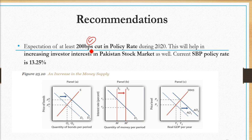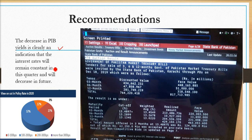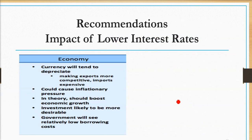Another recommendation involves a basis point system (BPS) of monetary policy expected in Pakistan. This will increase investments in the stock exchange. The current SBP policy rate is 13.25 percent; as shown in the economics diagram, a D1-to-D2 shift will shift the quantity of money and bring interest rates down, increasing money supply and in turn increasing aggregate demand. The decrease in PIB yield is a clear indication that interest rates will decrease in future. Lower interest rates cause the currency to depreciate, making exports more competitive and imports more expensive, leading to inflationary pressure and more economic growth.